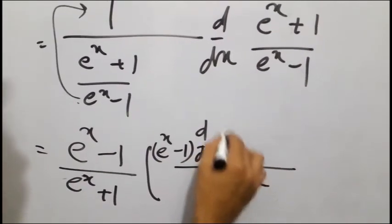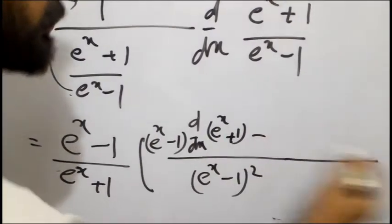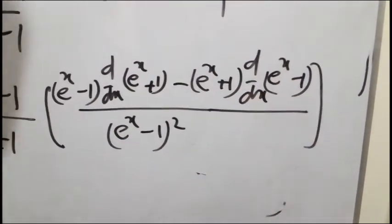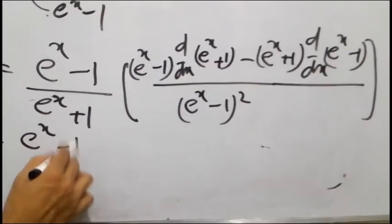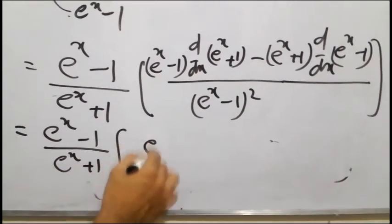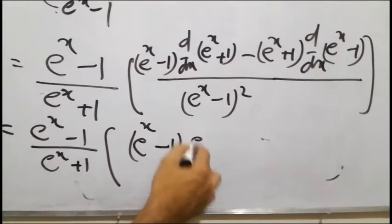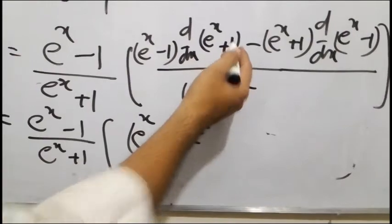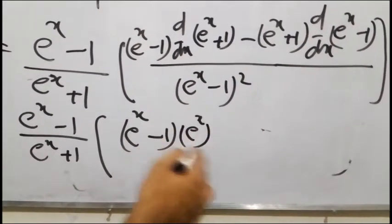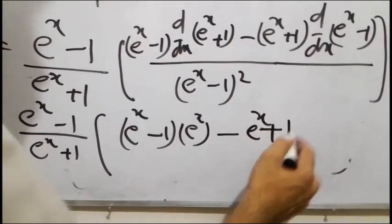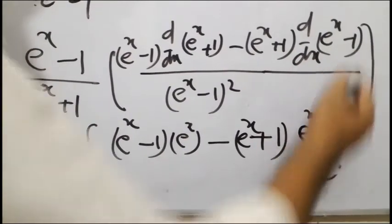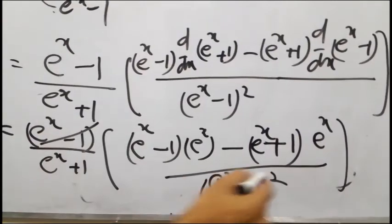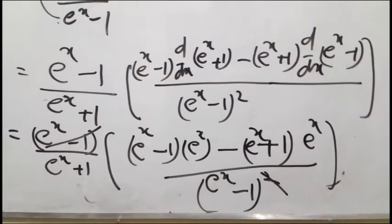ऊपर वाली value — e raised to power x plus 1 — का derivative। center में minus, e raised to power x plus 1 के derivative के लिए e^x वैसे ही आएगा, power का derivative one आएगा। e^x minus 1 bracket close। e^x minus 1, e^x plus 1 bracket — e^x का derivative e^x, minus 1 constant है तो 0। e^x minus 1 के square से (e^x - 1) cancel हो जाएगा। इसको short करके answer आ जाएगा।